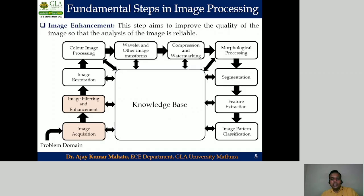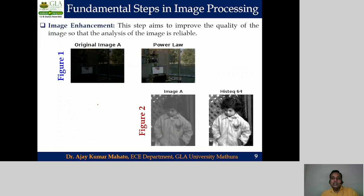The next step of image processing is image enhancement and image filtering. In image enhancement we enhance the quality of the input image for better human perception and interpretation. For example, in figure one the input image is very dark due to poor illumination, so a power law transformation is applied to obtain an enhanced output. In figure two the input image appears inferior due to improper illumination, so histogram equalization is performed to obtain an enhanced output image.